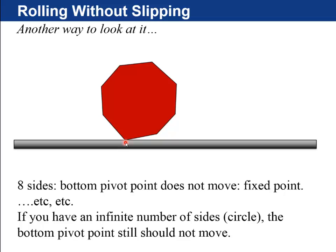So, et cetera, et cetera, if you had an infinite number of sides, which would just look just like a circle to our eyes, you still would not expect the bottom pivot point to move. I don't know if that helps, but it's another way to look at it.